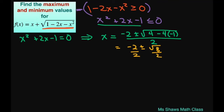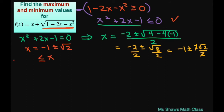Splitting the fraction, square root of 8 is 2 square root of 2, so this becomes negative 1 plus or minus 2 square root of 2 divided by 2. The 2's cancel, so your x values are x equals negative 1 plus or minus square root of 2. That means our x has to be between negative 1 minus square root of 2 and negative 1 plus square root of 2.